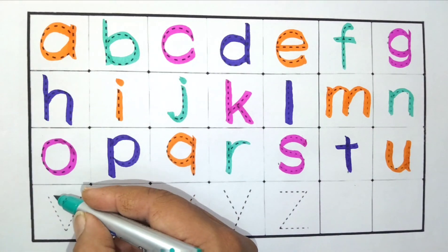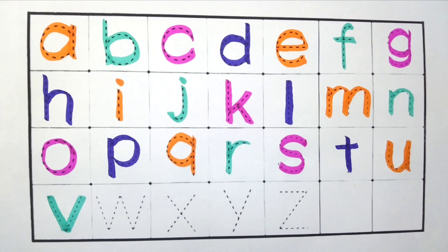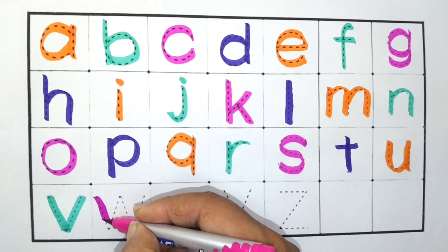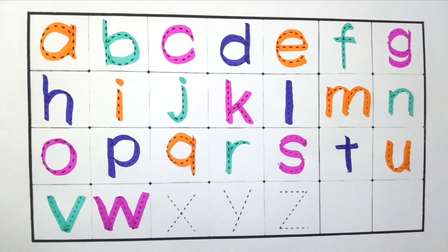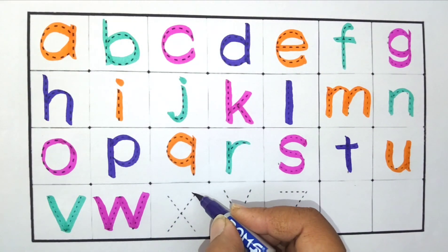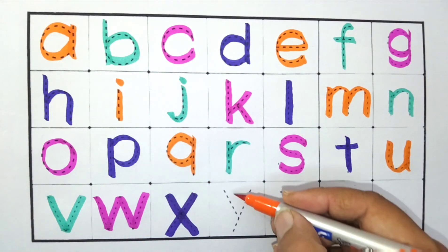Sea green color. V for Van. Pink color. W for Water. Purple color. X for X-Ray.